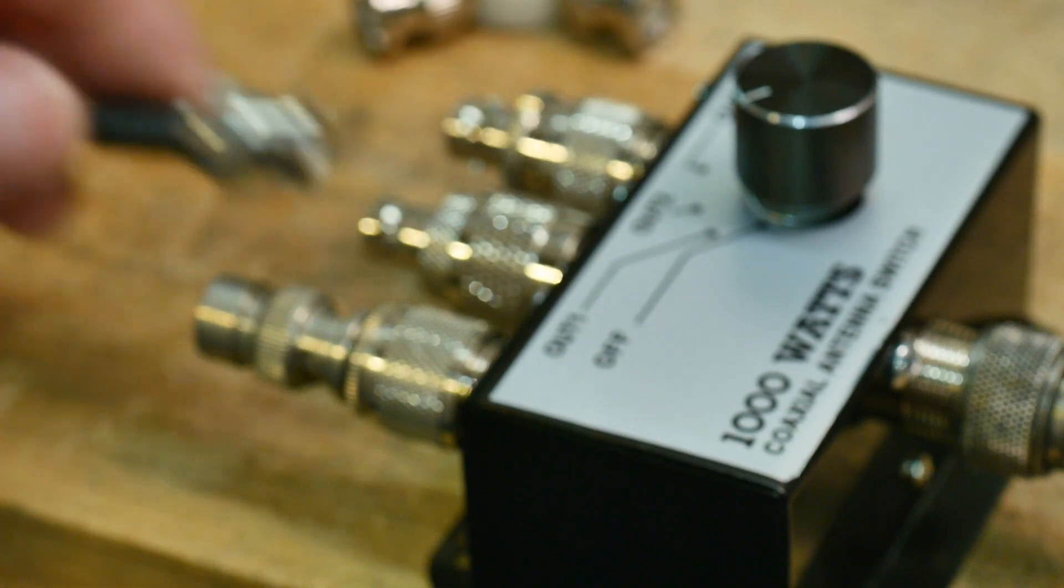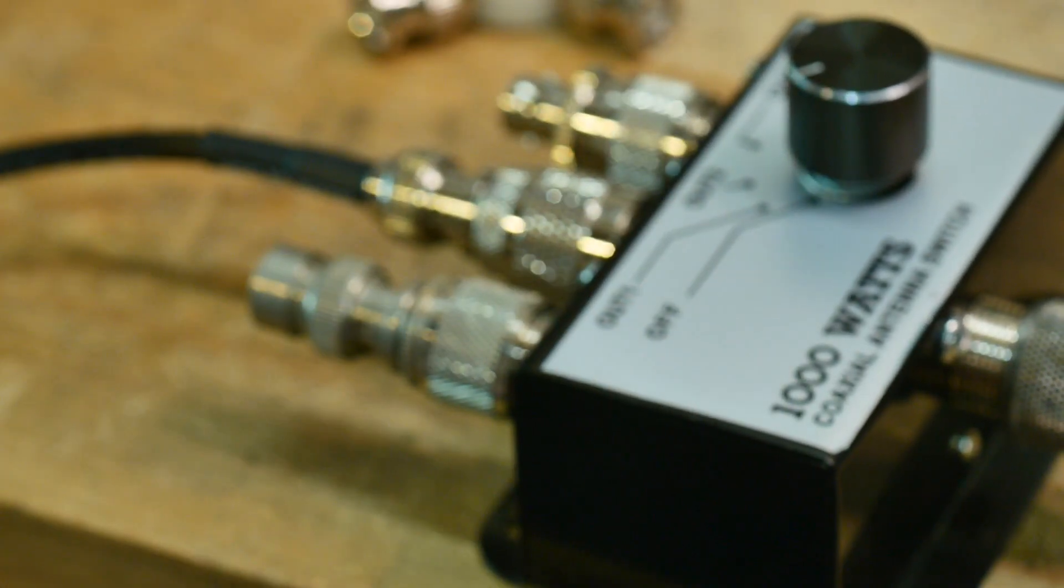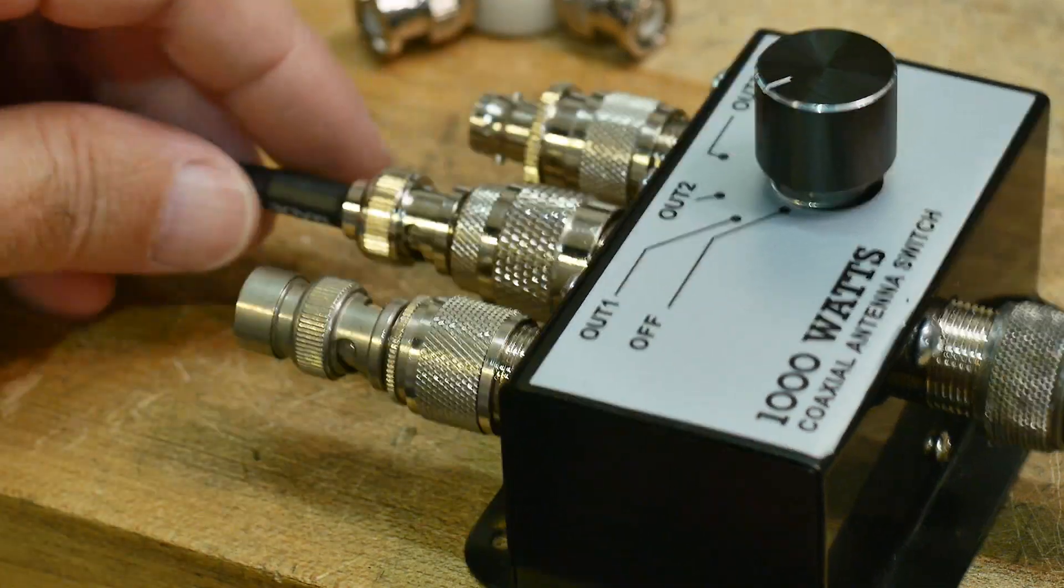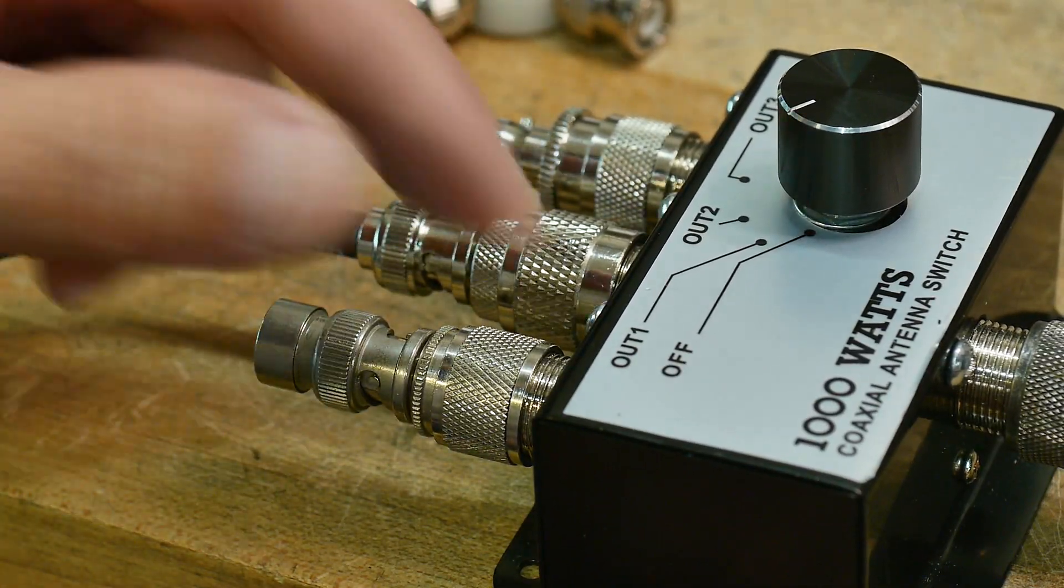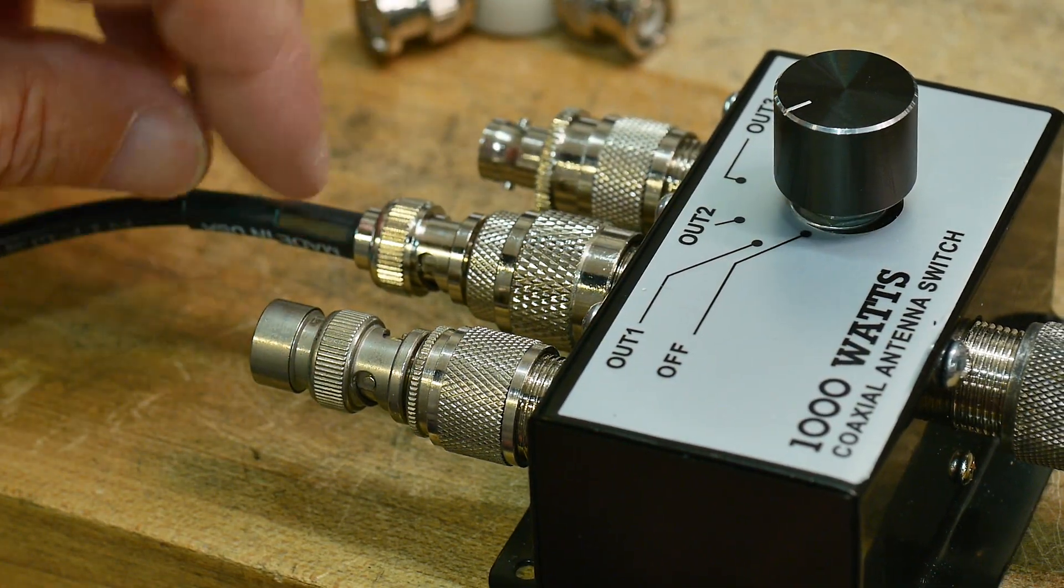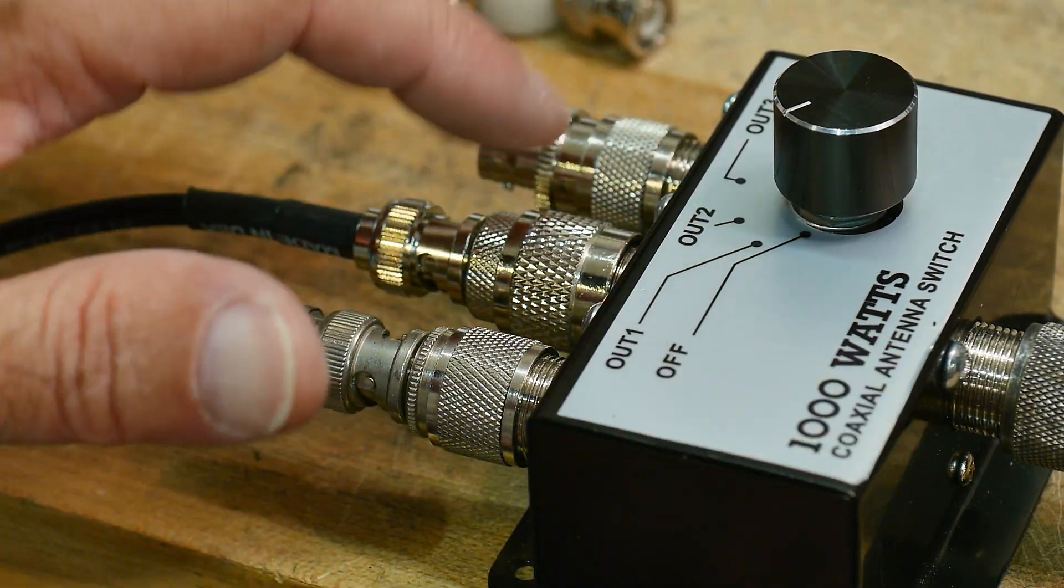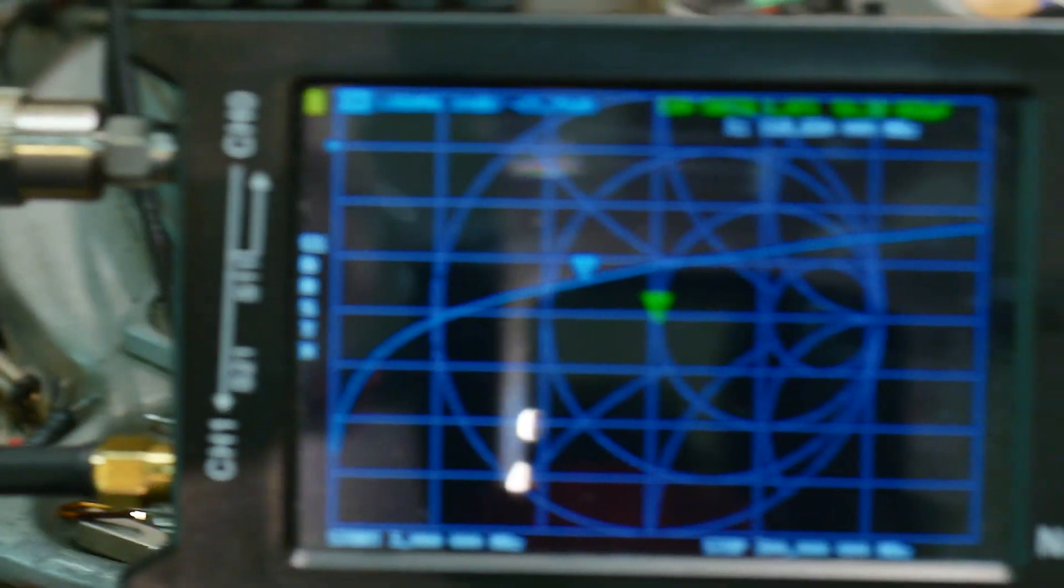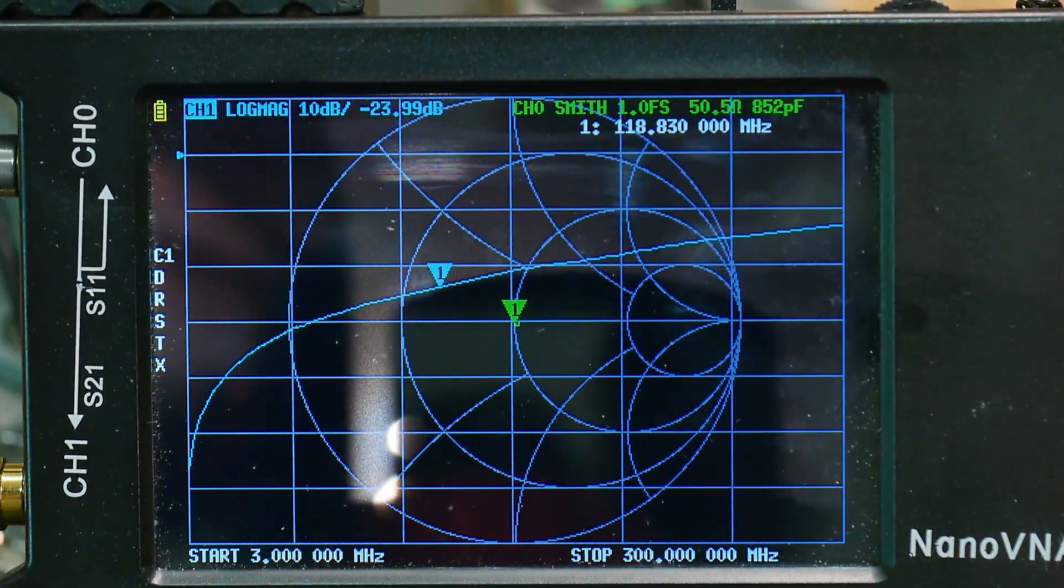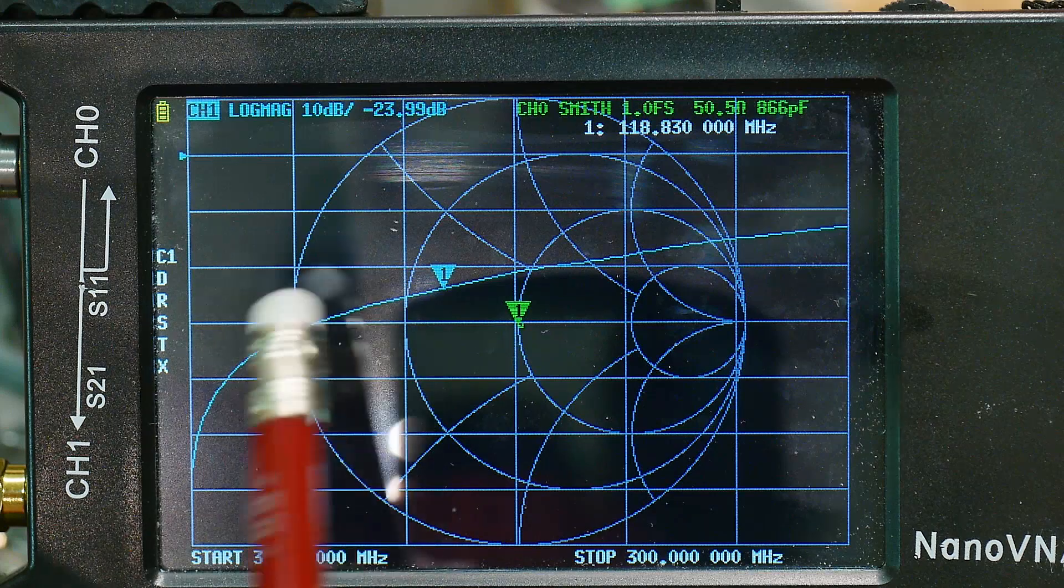Now I'm going to connect the S21, the channel 1. I'm going to connect it to an unused port. So if there's any leakage, it'll come out here and it'll be measured. And there we go. So we have a leakage.